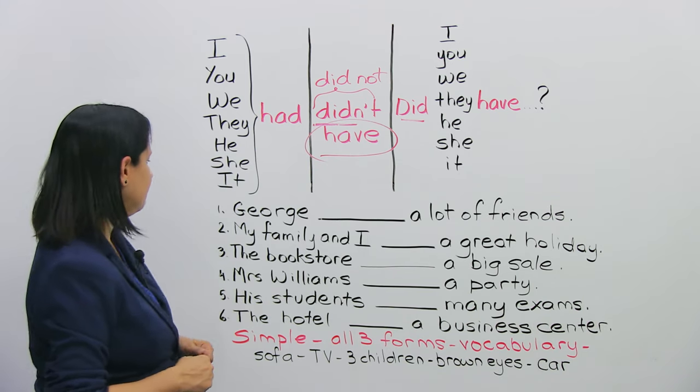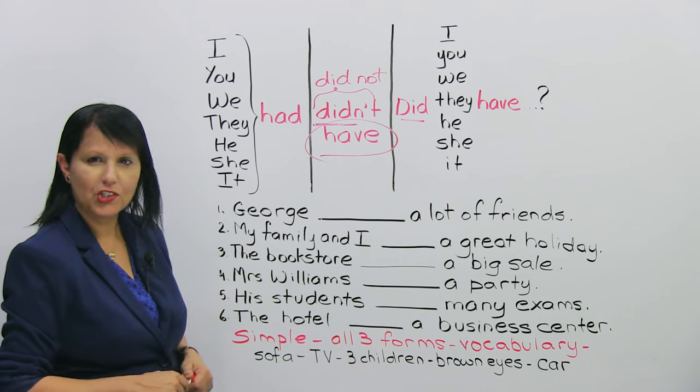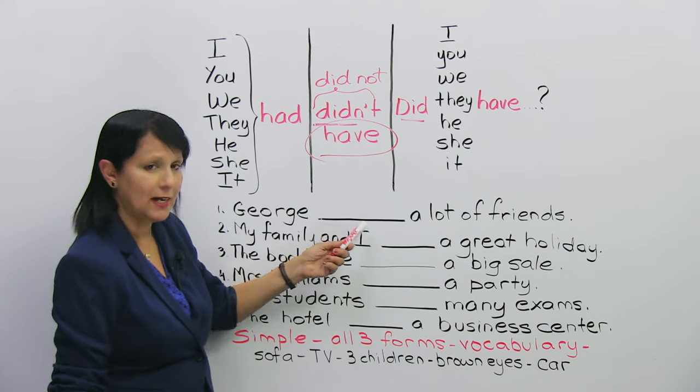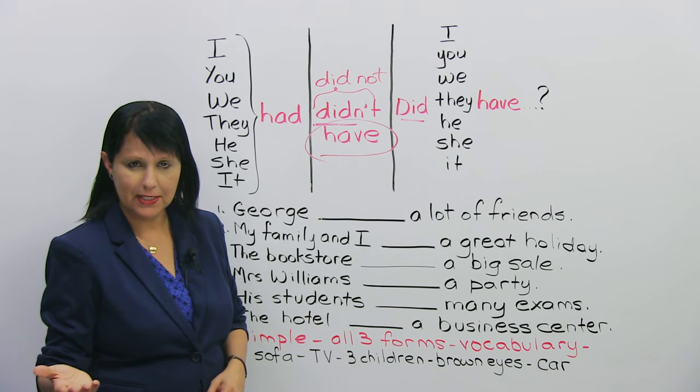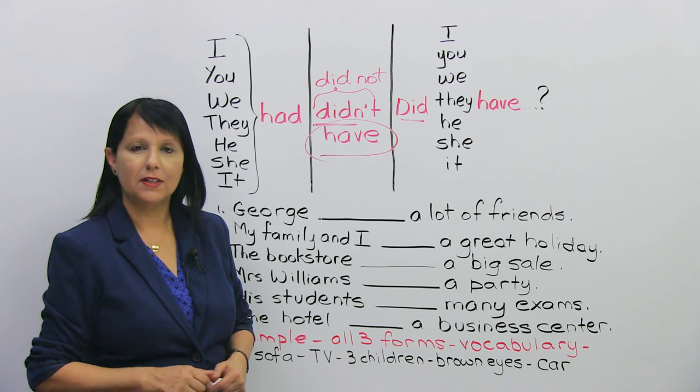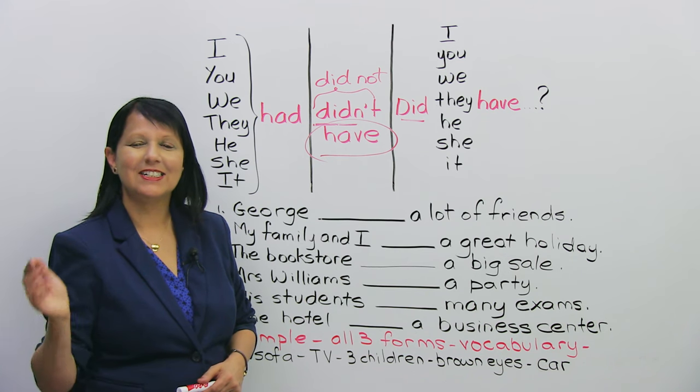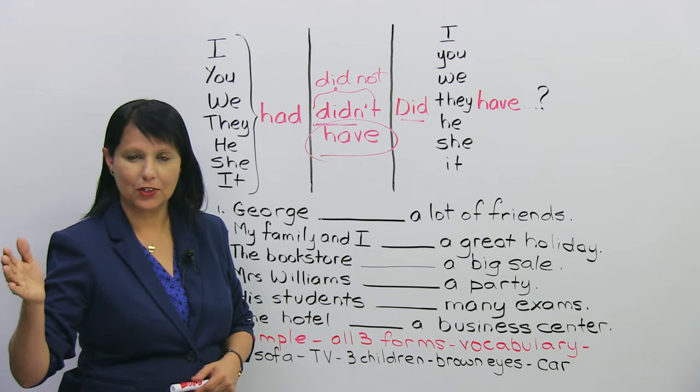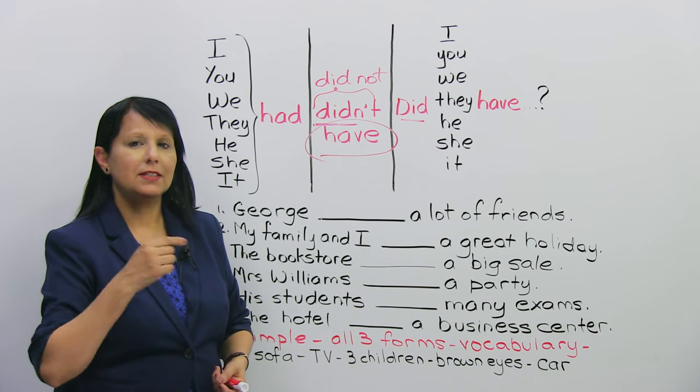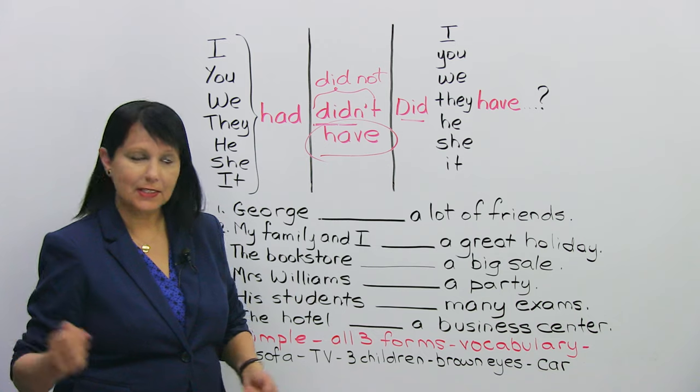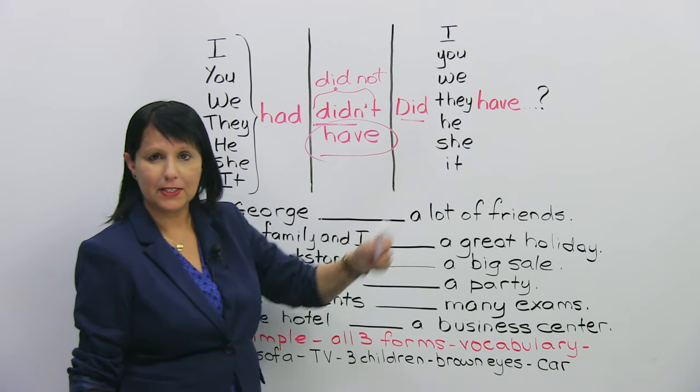Number one, George had a lot of friends, right? In the past. We're using the past. George had a lot of friends. Make it negative. George didn't have, good, a lot of friends. Make it a question. Did George have a lot of friends? Did George have a lot of friends?